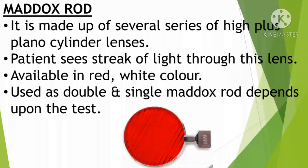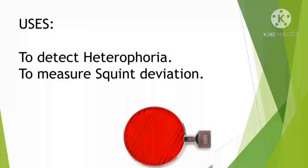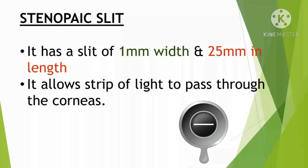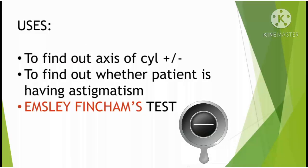The Maddox rod is a plano-convex lens in which the spotlight appears as a streak of light. The Maddox rod is used for measuring heterophoria as well as for measuring squint deviation. The Stenopeic slit is a black opaque disc with a slit of 1 mm width and approximately 25 mm length. The Stenopeic slit is used to find the axis of astigmatism and to identify stenopeic eye conditions and scotoma-related cases.